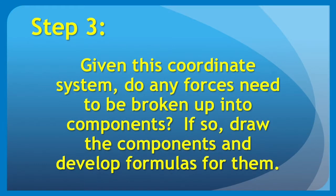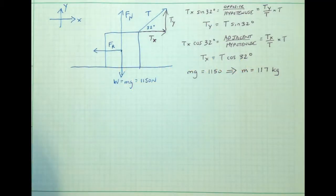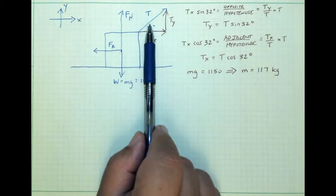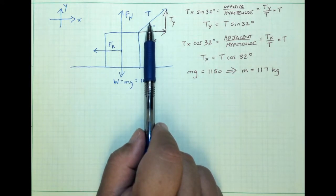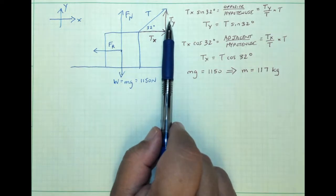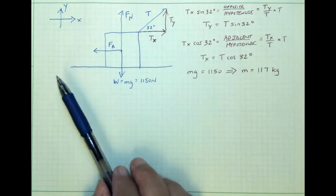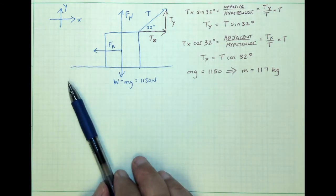The third step is to ask ourselves: do any forces need to be broken up into components now that we have a coordinate system, and then to write out formulas for those components. Again, the process is unchanged. Only one of our four forces must be broken up into components — that's the tension force — into an x component and a y component. We use trigonometric functions to write out formulas for those components, as shown in the first video in this series.